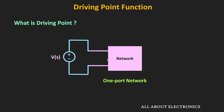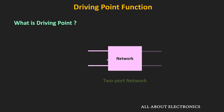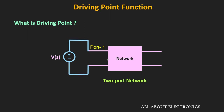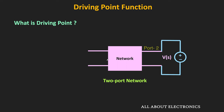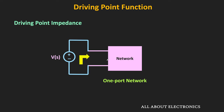In a one-port network, since there is only one port, that standalone port will act as the driving point, because the energy source can only be connected to that particular port. But in a multiport network, depending on where the power supply is connected, the specific port will act as the driving point. For example, if the power supply is connected to port 1, then that port acts as the driving point; if connected to port 2, then port 2 acts as the driving point. The impedance seen through this driving point is known as the driving point impedance of the network.